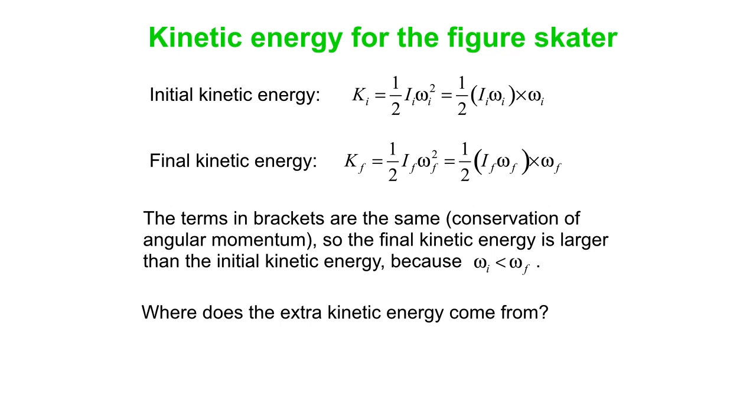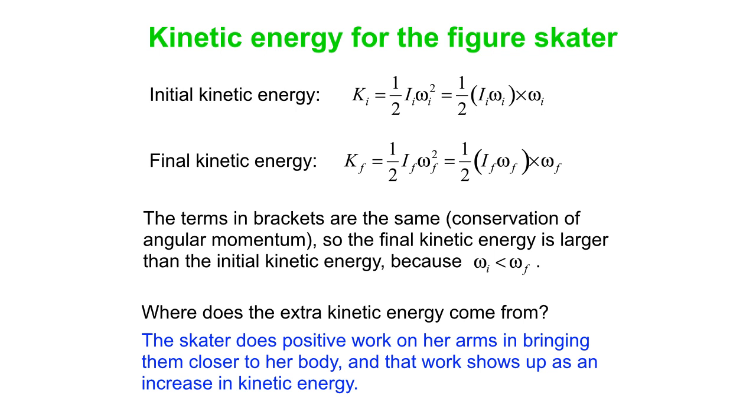What? It's larger? Where does the extra kinetic energy come from? And the only place it can really come from is the skater herself. So she does positive work on her arms, bringing them closer to her body. Okay? The displacement is inward.